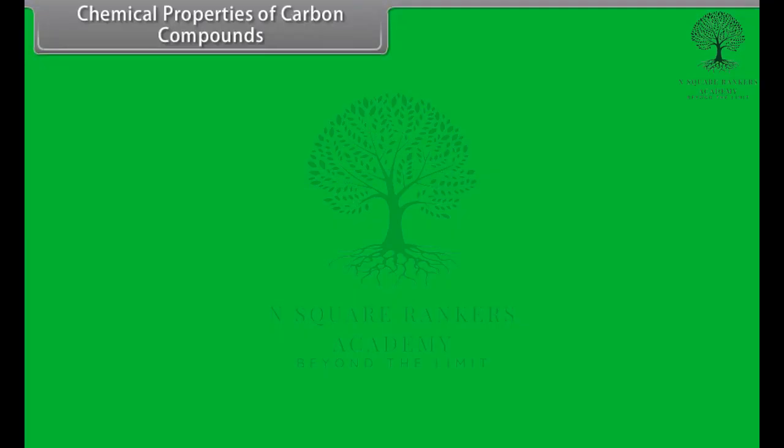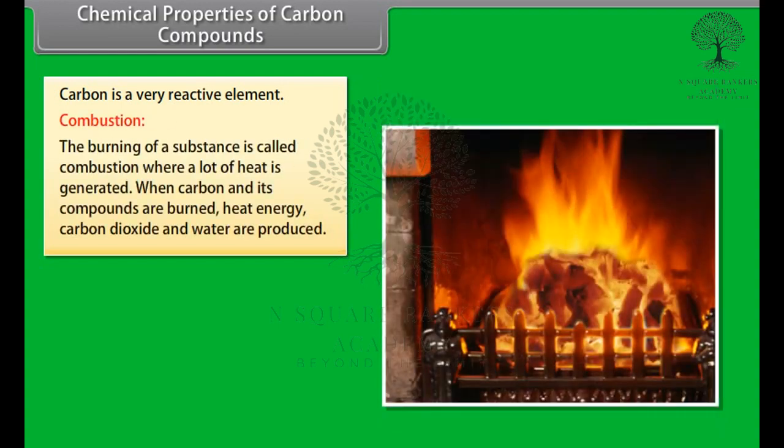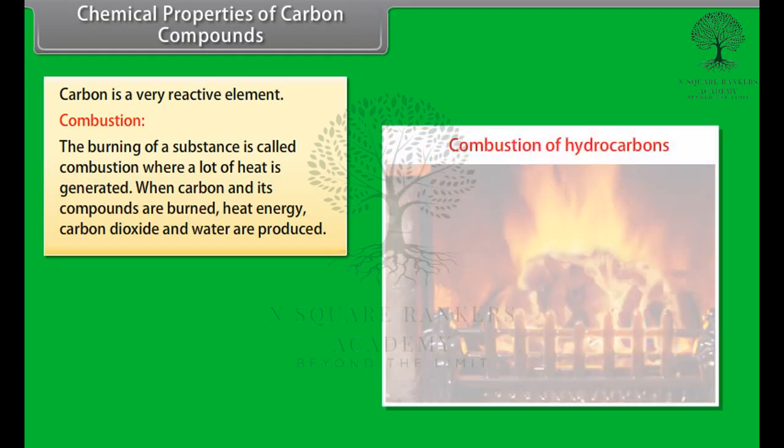Chemical properties of carbon compounds. Carbon is a very reactive element. Main chemical properties are listed. Combustion. The burning of a substance is called combustion. It is a process that generates a lot of heat. When carbon and its compounds are burnt, heat energy, carbon dioxide and water are produced.